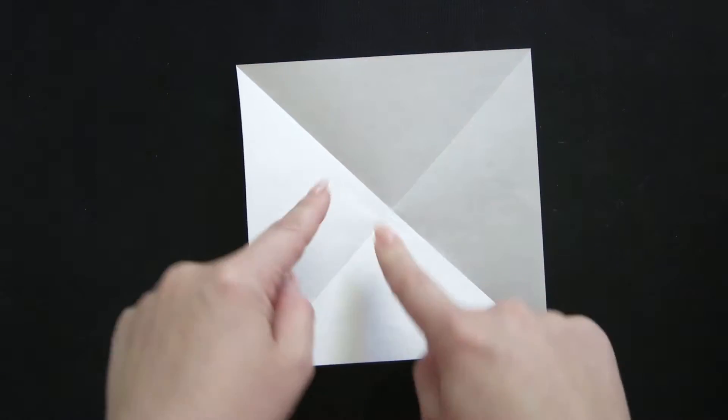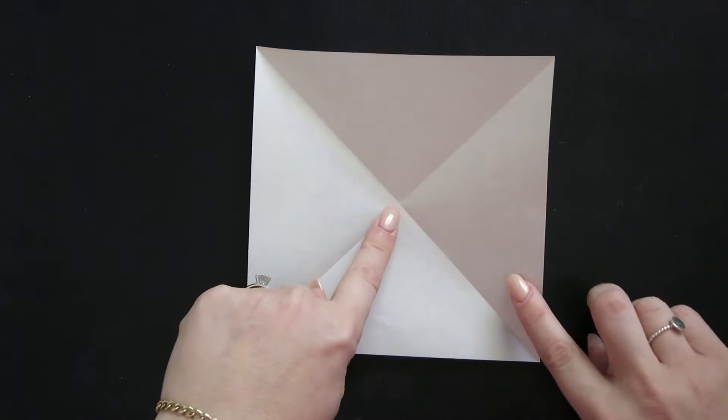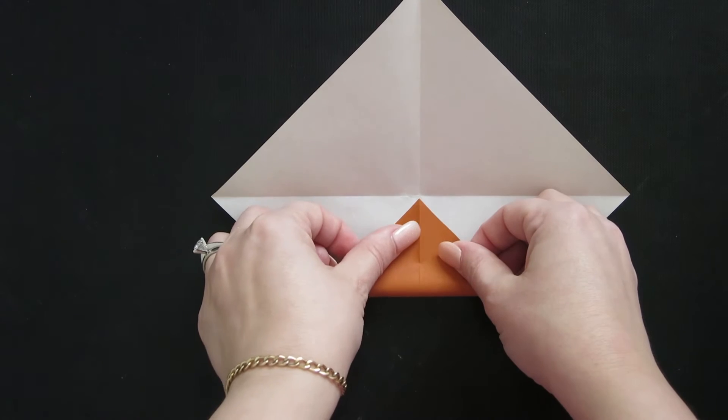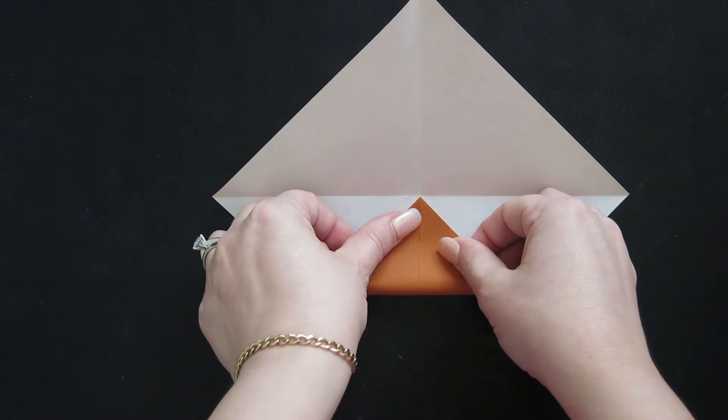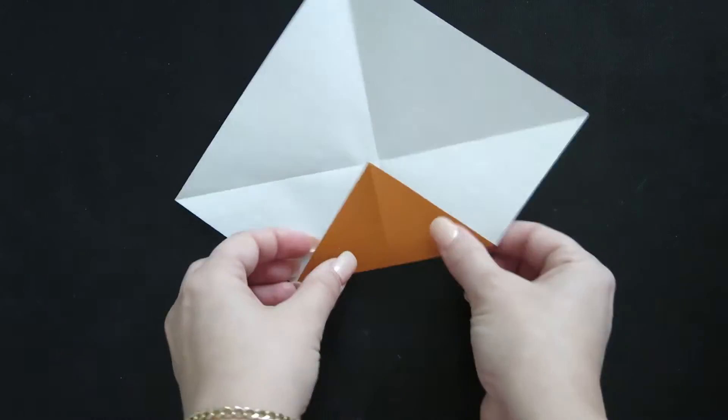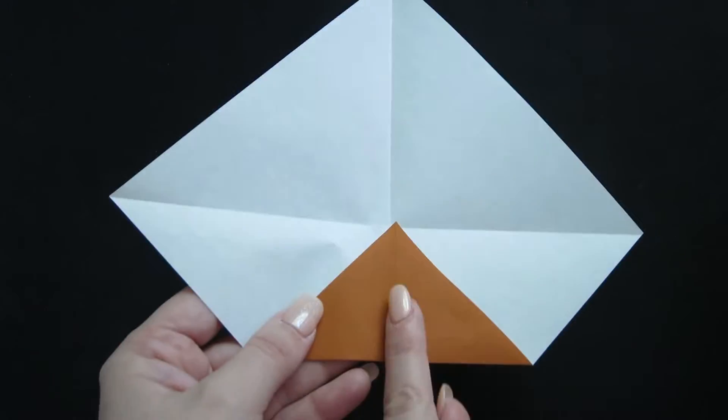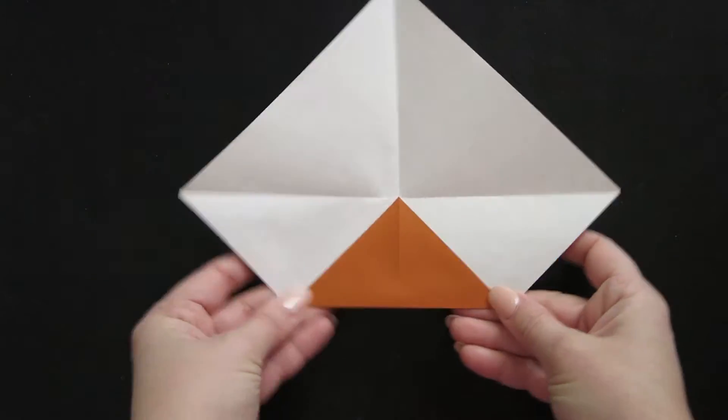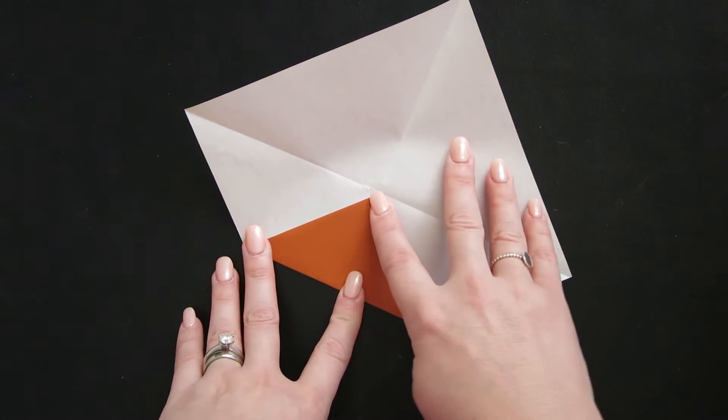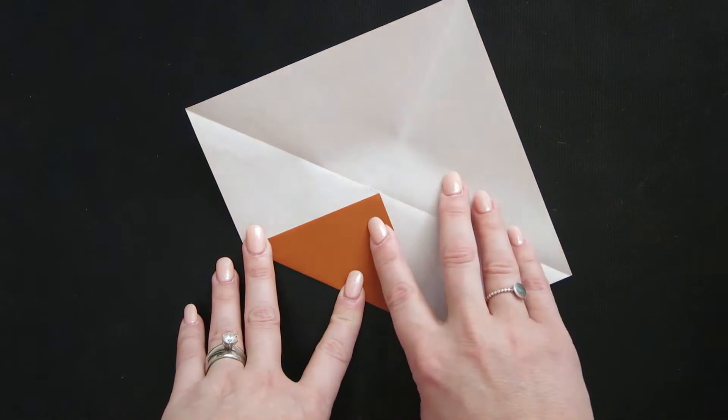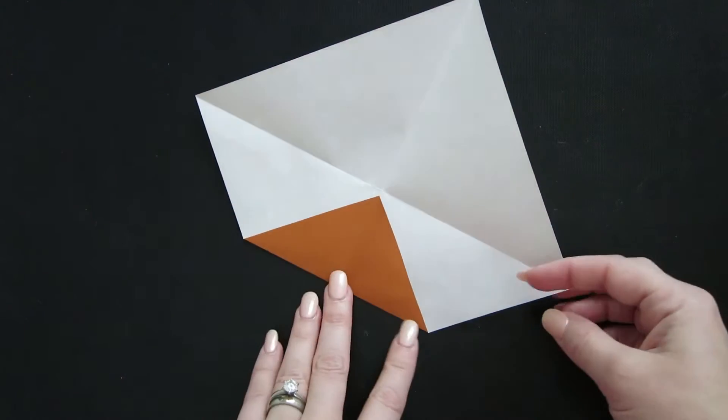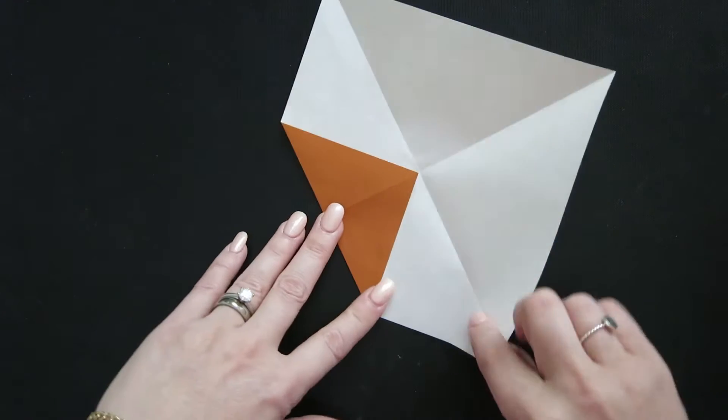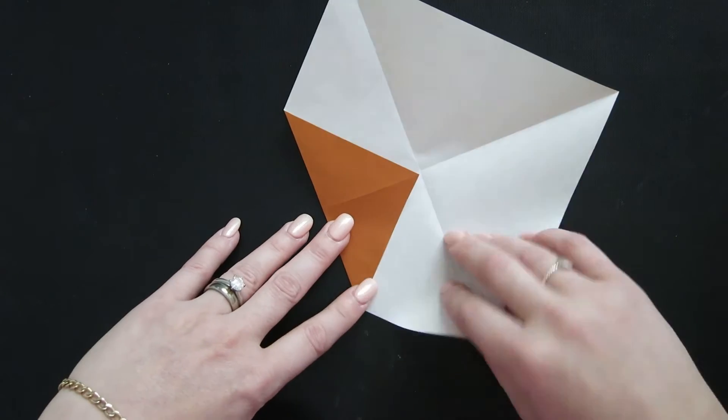We're going to work with that center point where the two lines intersect by taking all four corners and bringing them into the center one at a time. So there's one point into the center, noting that the crease is lined up with the rest of the crease. So it's a nice straight line going straight through your paper. And also keeping in mind that you don't want that point to go past the crease because it won't fold properly later on. So right up to it, if anything, just shy of it. And do the same all the way around.